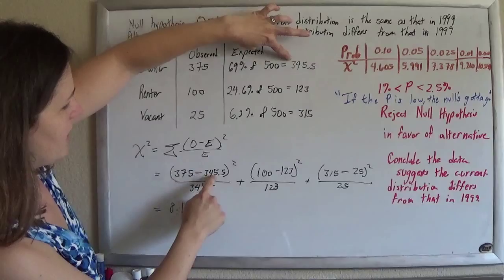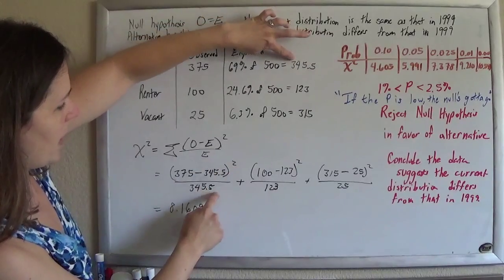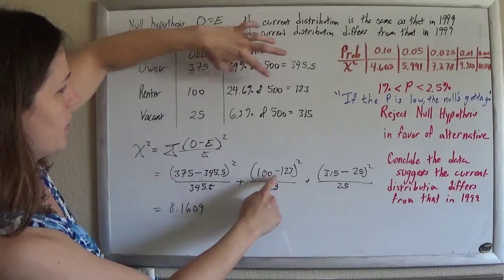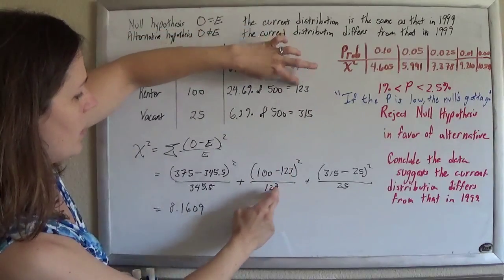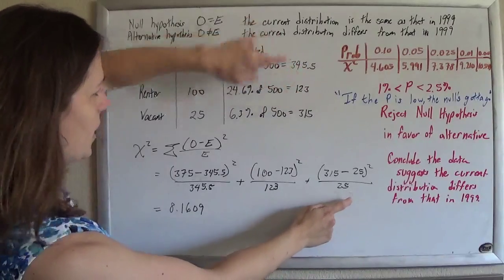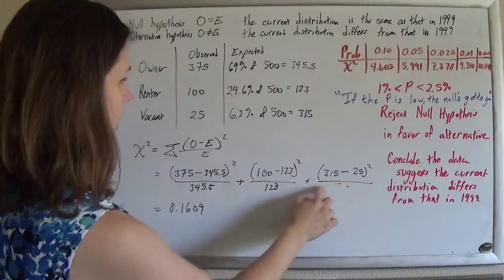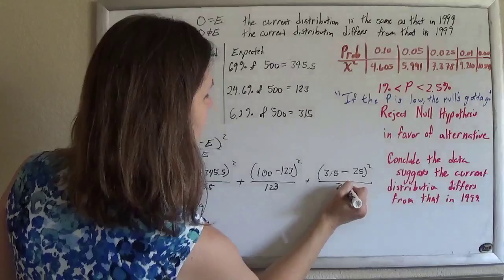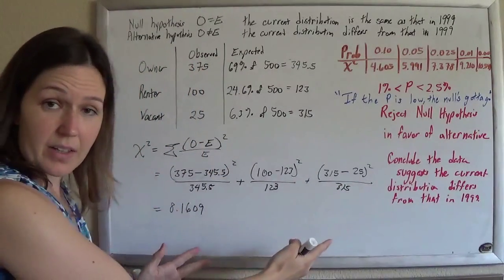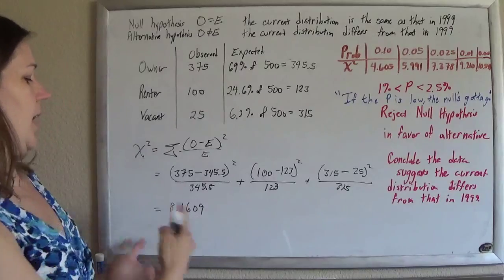So that's what we're doing here, we're doing observed minus expected, squared over expected, and then doing the same thing for each one of these. Observed minus expected, square that, over that. Observed minus expected, square that, over expected. Whoopsie. That should be a 315 down there. And so, cool. Plug that all in on your calculator, you get this lovely 8.1609.